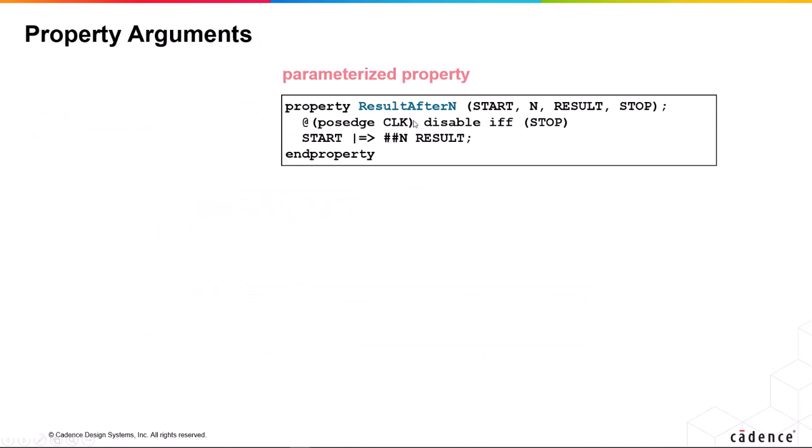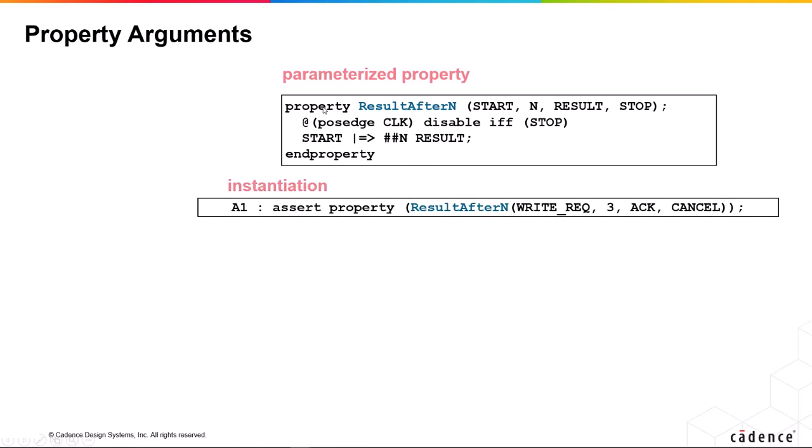So properties can have a few more arguments than sequences. For example, the parameters can be events, not just booleans. So what we've got here is a property definition and we've got start, N, result, and stop as the arguments. We define behavior in terms of those,